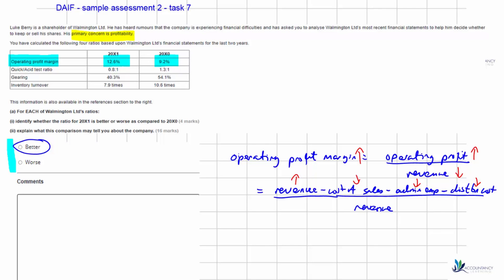We've also identified that the denominator falling may cause the improvement. Revenue might go up, causing improvement in the numerator, but equally revenue could have gone down — perhaps selling prices have been reduced to encourage more purchases. We don't really know without further data, but we're speculating on possible reasons. It could also be that we've changed the mix of our sales and are currently selling a variety of more profitable products compared with the previous year.